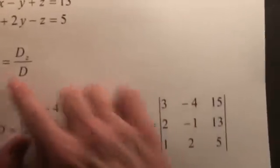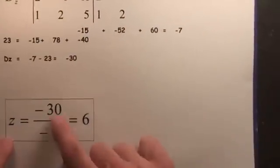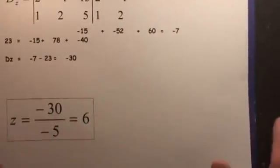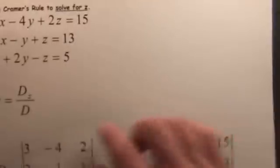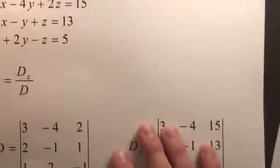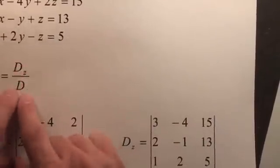Therefore, when you go back and you find out what z is, we're going to take the d sub z divided by d and we get positive 6. So now we know that z is 6. You could obviously do the same thing to find the other variables.